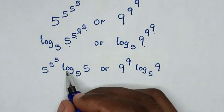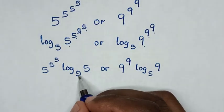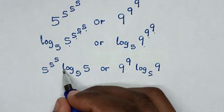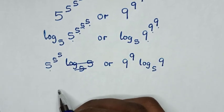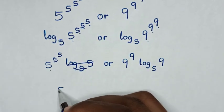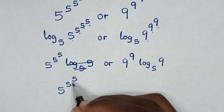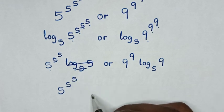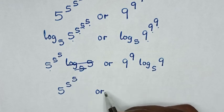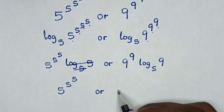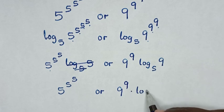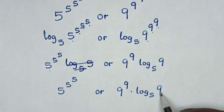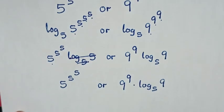In the next step, log base 5 of 5 equals 1, so it cancels. This leaves us comparing 5 power 5 power 5 with 9 power 9 times log base 5 of 9.